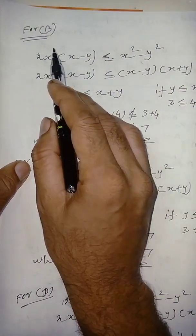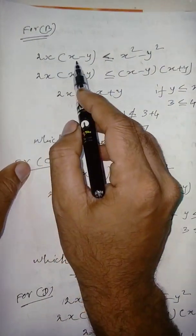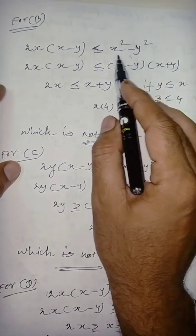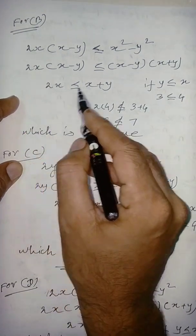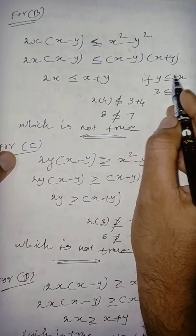So, 2x, 2 minus 1, that is 1, x minus 1, less than or equal to x^n minus y square. This can be written as like this. So, this terms are gets cancelled. We are getting 2x less than or equal to x plus y.